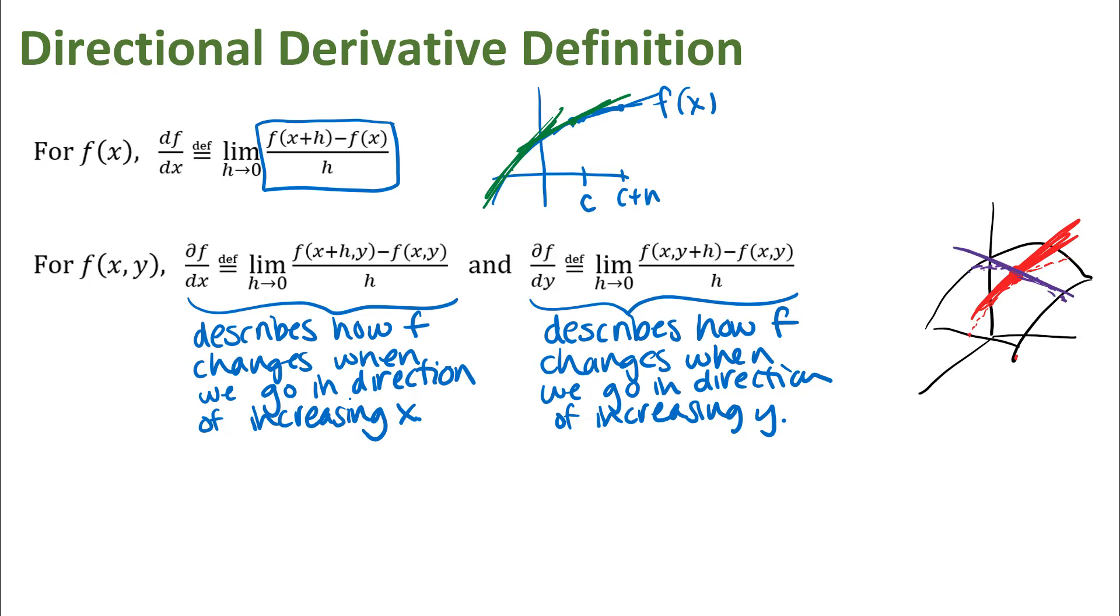But we kind of talked about this when we first looked at partial derivatives that you might be at that particular point and want to go in some other direction. Some direction that is not just along the x direction or the y direction, but maybe you're at that point and you want to go in a direction that is maybe kind of between the x and y and you're interested in rates of change in that direction.